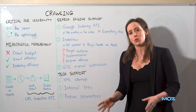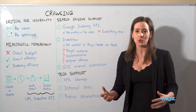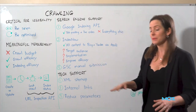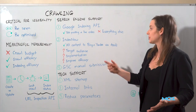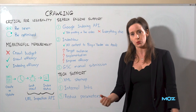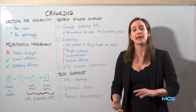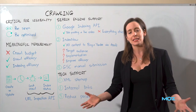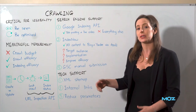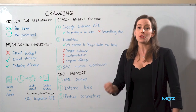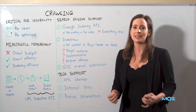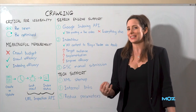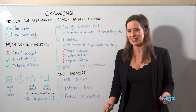The biggest challenge with IndexNow is that Google doesn't use this API — they've obviously got their own. But that doesn't mean disregard it: Bing uses it, Yandex uses it, and a whole lot of SEO tools, CRMs, and CDNs also utilize it. Generally, if you're in one of these platforms and you see an indexing API option, chances are it's powered by IndexNow. The good thing about these integrations is it can be as simple as toggling on a switch — which might seem like an easy SEO win.